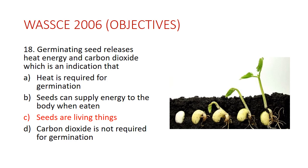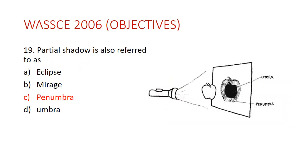Question nineteen: the partial shadow is also referred to as C — penumbra. Looking at the diagram, an opaque object forms two types of shadows: the umbra, which is totally dark, and the penumbra, which is the partial shadow.